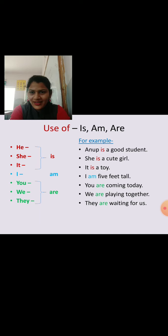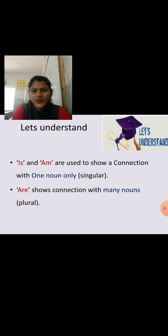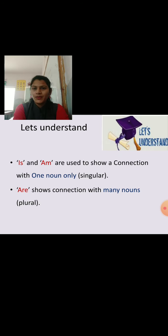Understand the points? Is and Am are used to show a connection with a single noun or single person. And Are shows the connection with many nouns or more than one noun — the connection between two people or more than one people.